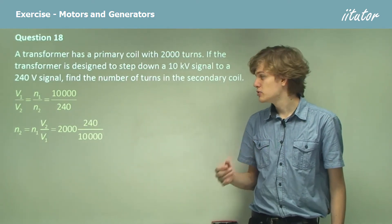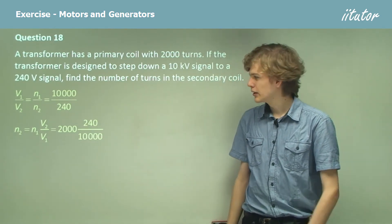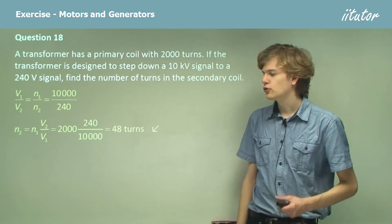So substituting the numbers we have 2,000 turns times 240 volts over 10 kilovolts. And this of course will simplify to 48 turns.